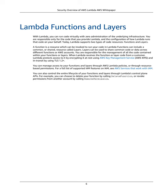Lambda supports two types of code resources: functions and layers. A function is a resource which can be invoked to run your code, and Lambda functions can include a common or shared resource called layers. Layers can be used to share common code or data across different functions or AWS accounts. When Lambda receives function or layer code from a customer, Lambda protects access to it by encrypting it at rest using AWS Key Management Service (AWS KMS) and in transit using TLS 1.2+. You can manage access through AWS Lambda policies or resource-based permissions, and control the entire lifecycle of your functions through Lambda's control plane APIs.